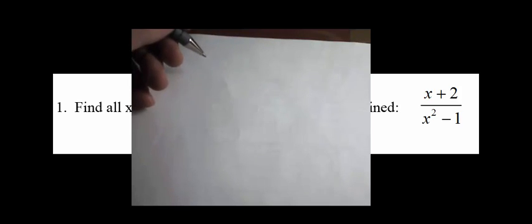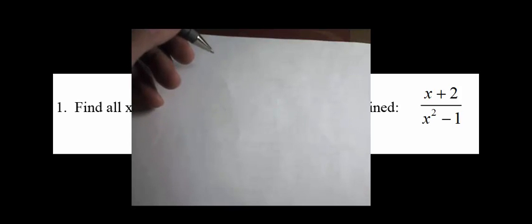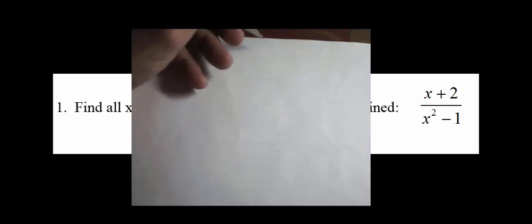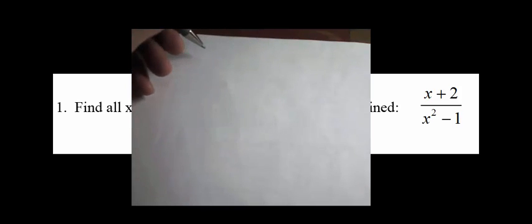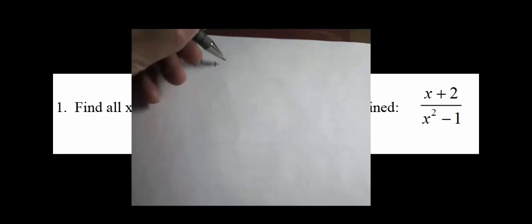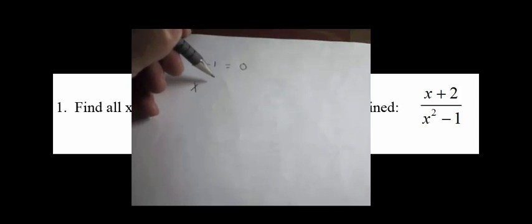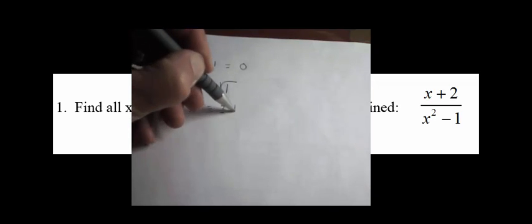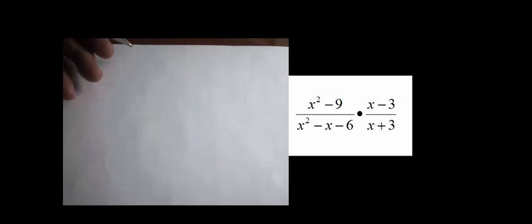Here you're asked to find values of x that make this fraction undefined. Recall that if the denominator is 0, a fraction is undefined. So we're going to take the denominator, which is x squared minus 1, and solve for x by setting the denominator to 0. Moving the negative 1 to the right side, x squared equals positive 1. Taking the square root of both sides, x equals plus or minus 1.